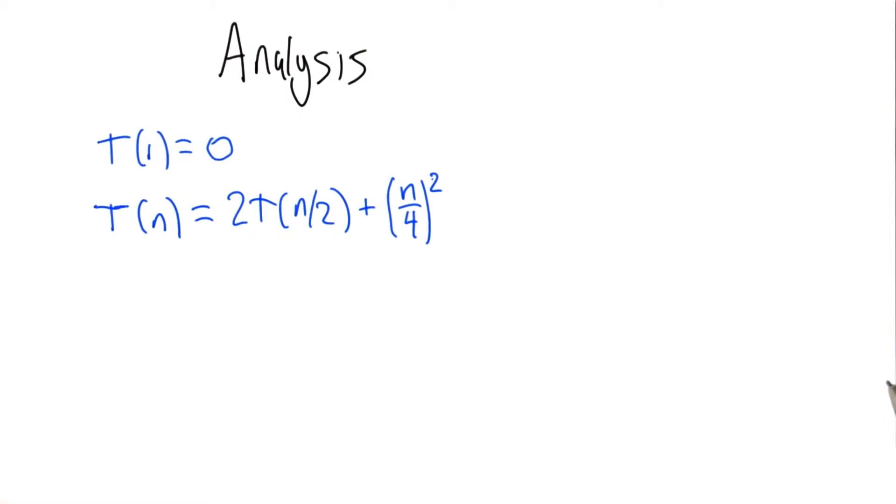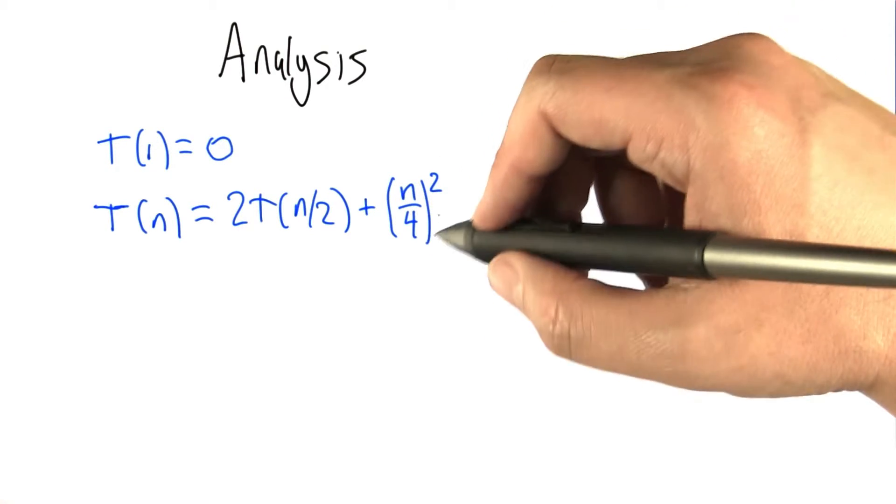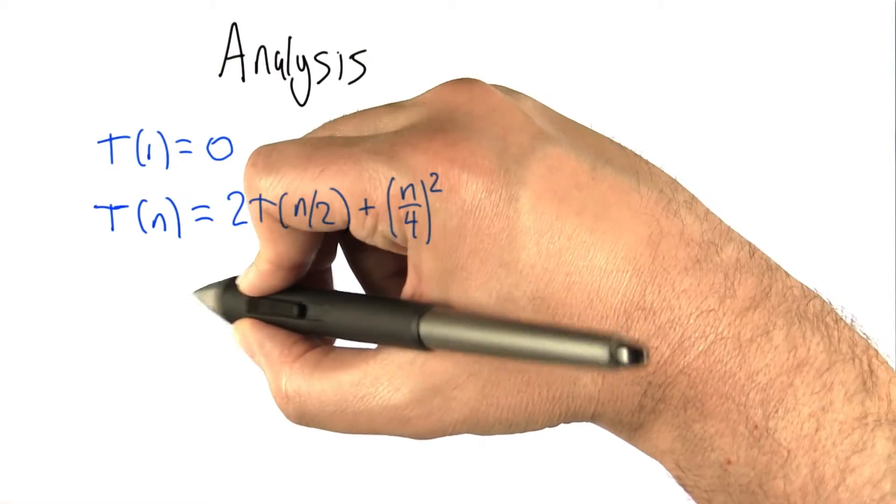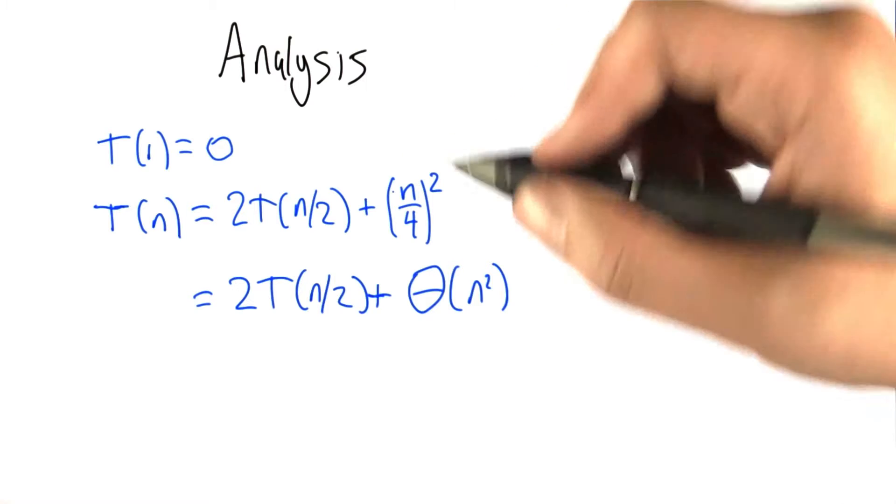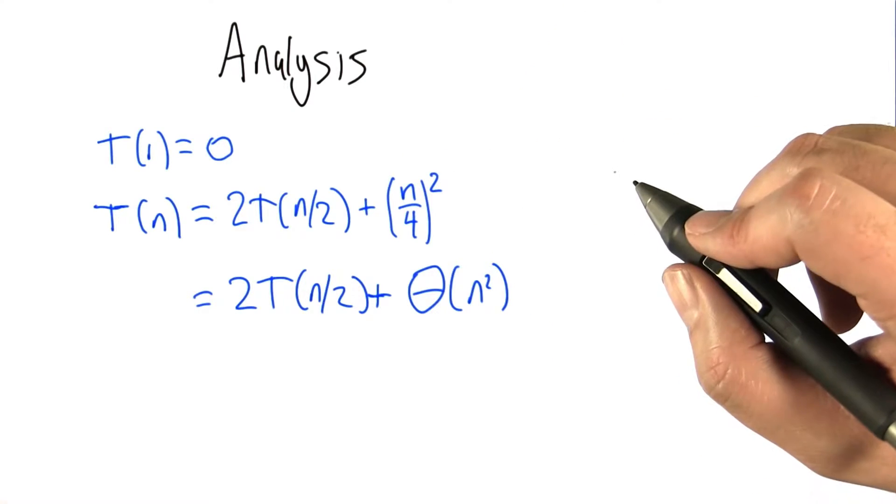So this becomes our recurrence relation. It's a little bit cumbersome to work with this. It has funny constants in it. So what we're going to do is actually think about it in big theta notation. This is just n squared, right? It's really 1/16th n squared, which is big theta of n squared.